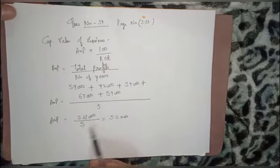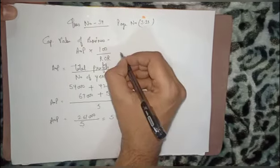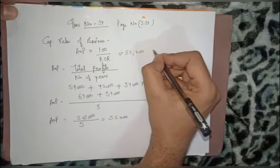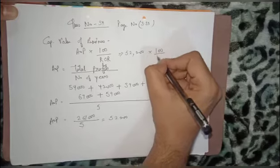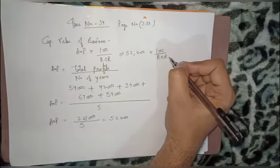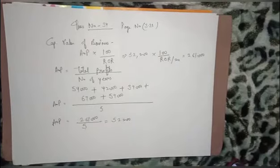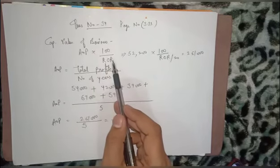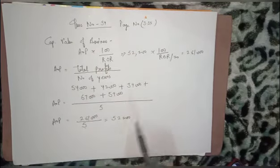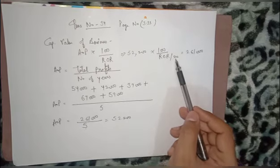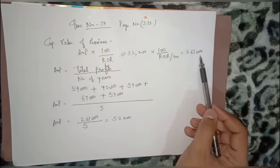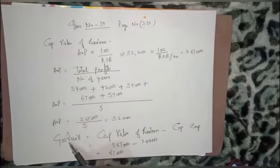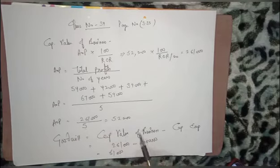Now we can fill this value into the formula. Average profit 52,200 × 100 ÷ Rate of Return (20%) gives us the capitalized value of the business, which is 2,61,000.